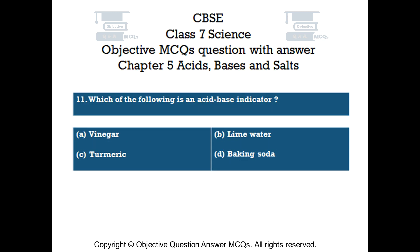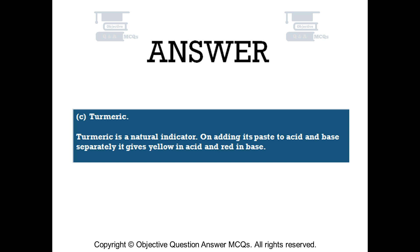Question number 11. Which of the following is an acid-base indicator? Option A, vinegar. Option B, lime water. Option C, turmeric. Option D, baking soda. The right answer is Option C: turmeric. Turmeric is a natural indicator — on adding its paste to acid and base separately, it gives yellow in acid and red in base.